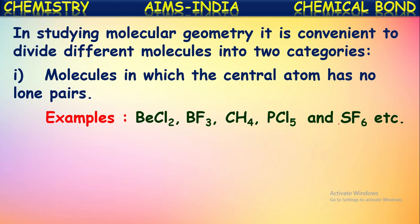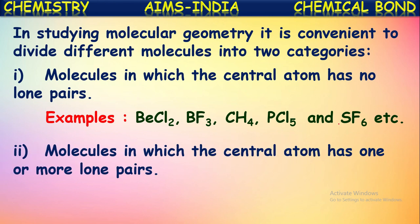While predicting the shape and bond angles of molecules it is convenient to segregate all the molecules into these two categories. The first is molecules with the central atom having only bond pairs of electrons without lone pairs. The second category is the molecules in which the central atom has one or more lone pairs also along with bond pairs.